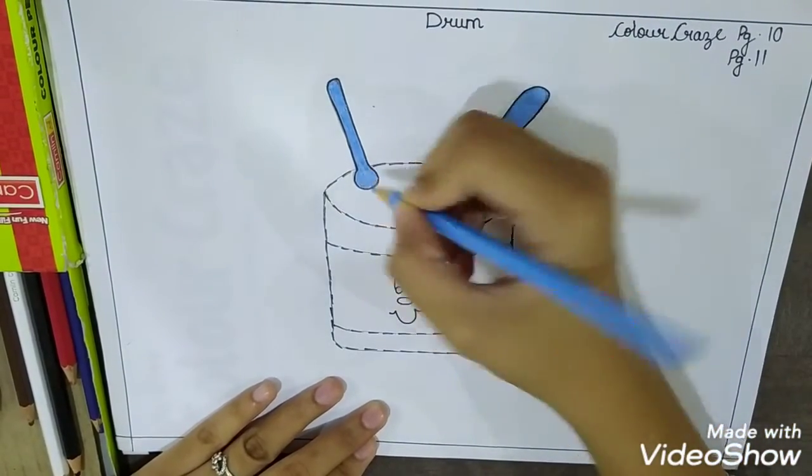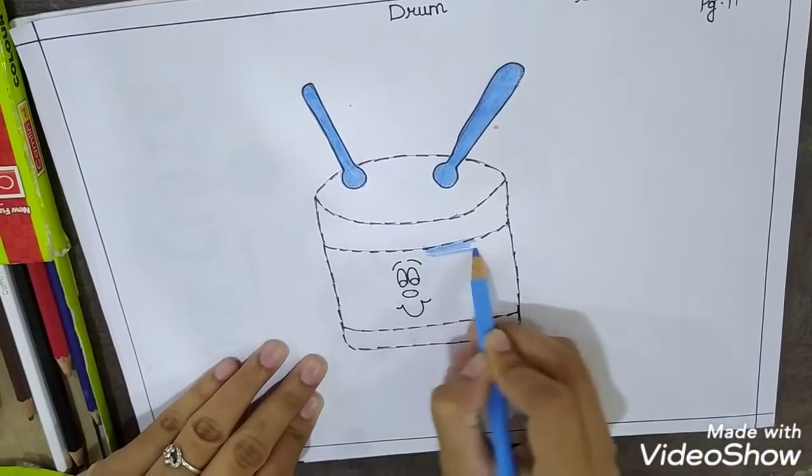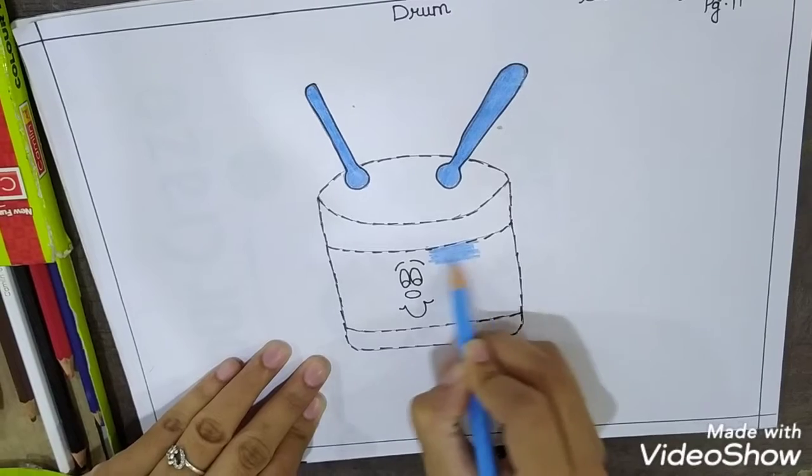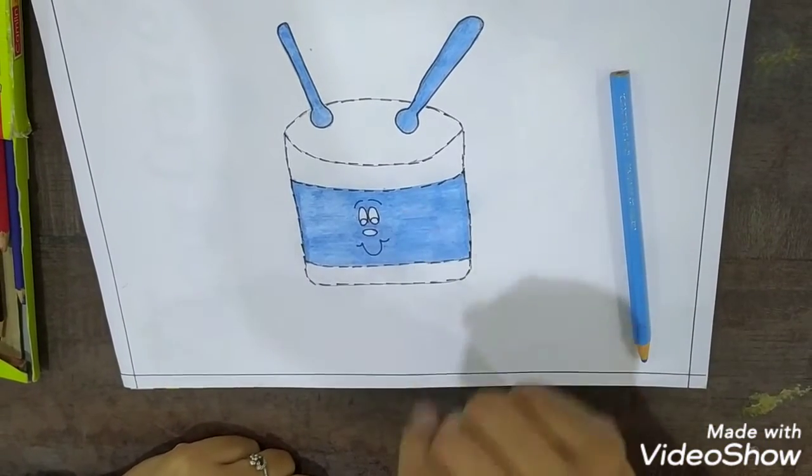Okay. We have completed with the drumsticks. Now I am going to color this part also in the blue. So see I have completed with the blue color.